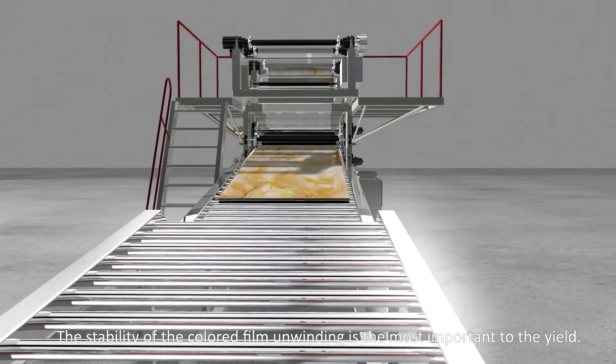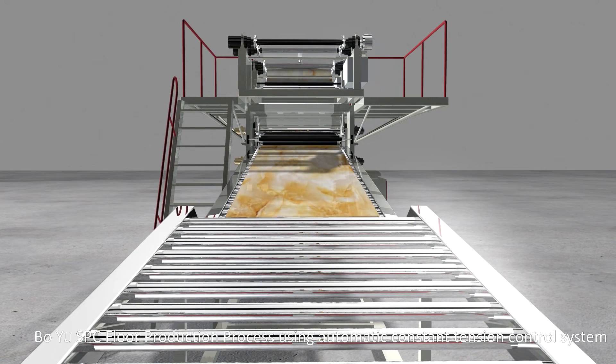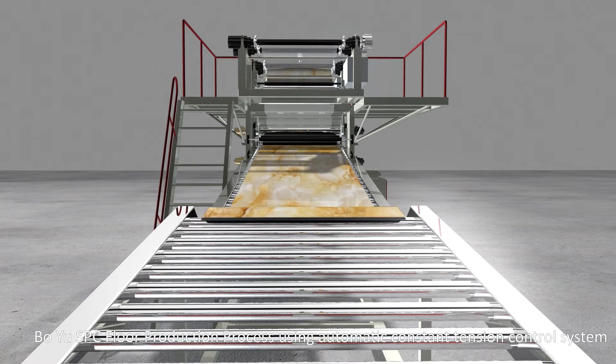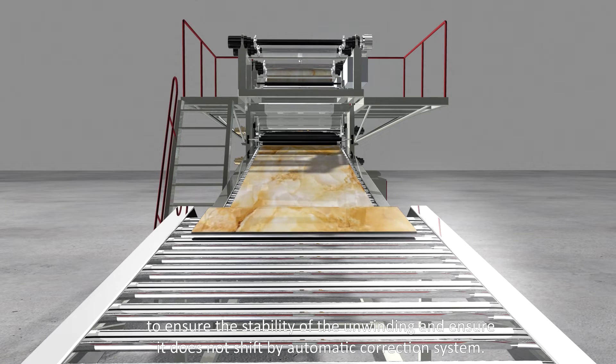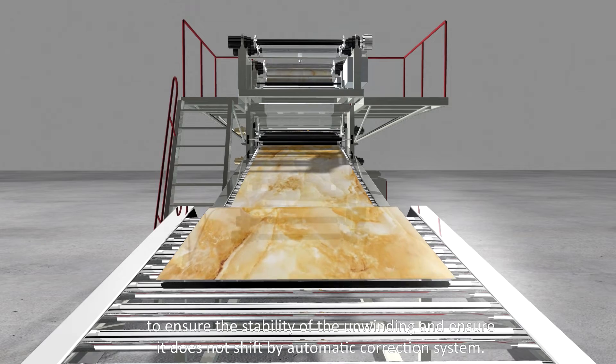The stability of the colored film unwinding is the most important to the yield. Boyu SPC floor production process uses automatic constant tension control system to ensure the stability of the unwinding and ensure it doesn't shift by automatic correction system.